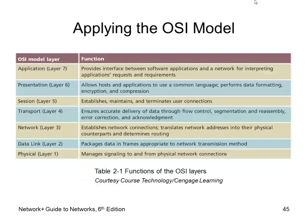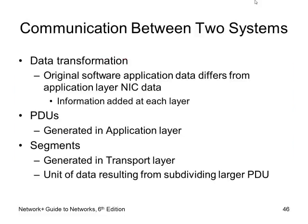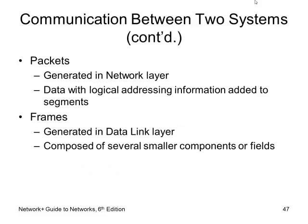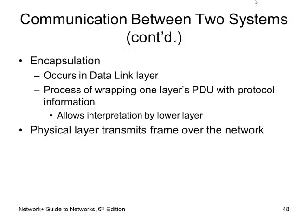Here's a brief overview of all the layers again. Data transformation happens as we go down the stack — we take the data and add headers to it at each layer: application header, presentation header, session header, transport header, and so on. This process is called encapsulation. PDU stands for Protocol Data Unit. The transport layer generates segments, the network layer generates packets, and the data link layer breaks things into frames. When we talk about VPNs later, we'll see data encapsulated even more.